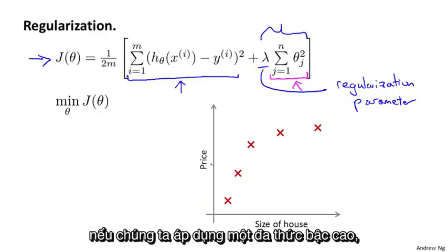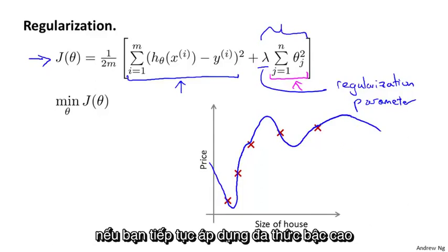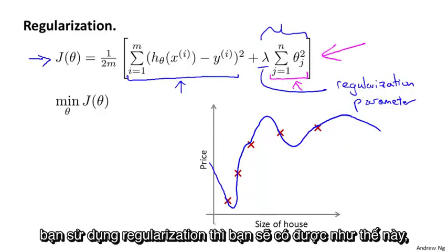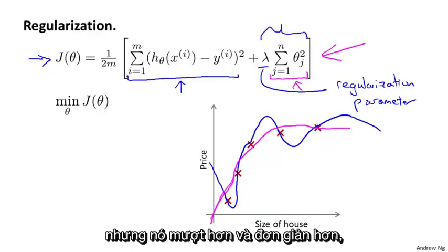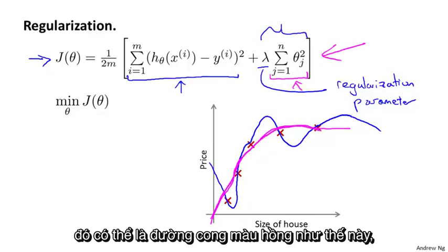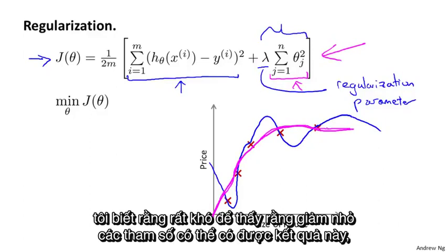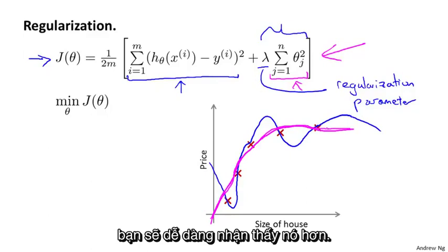For our housing price prediction example, whereas previously if we had fit a very high-order polynomial, we may have wound up with a very weakly or curvy function like this. If you still fit a high-order polynomial with all the polynomial features in there, but instead you just make sure to use this sort of regularized objective, then what you can get out is, in fact, a curve that isn't quite a quadratic function, but is much smoother and much simpler. And maybe a curve like the magenta line that gives a much better hypothesis for this data. Once again, I realize it can be a bit difficult to see why shrinking the parameters can have this effect. But if you implement this algorithm yourself with regularization, you will be able to see this effect first-hand.